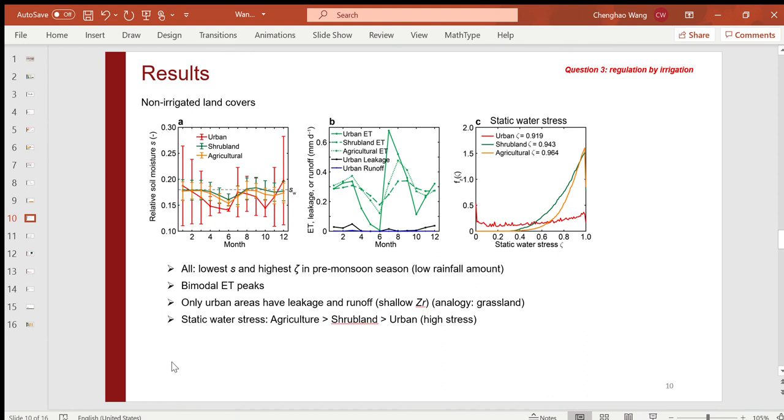I then ran the soil water balance model to examine soil moisture and vegetation phenology over different land covers if there is no irrigation. I like to point out that all results are averaged over continuous 1,000-year simulations. This will ensure we are simulating more realistic seasonality. The first plot here shows the monthly relative soil moisture for three land cover types, with error bars showing the standard deviation of 1,000-year simulations.